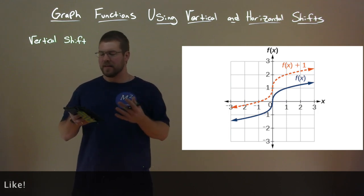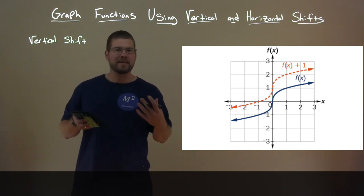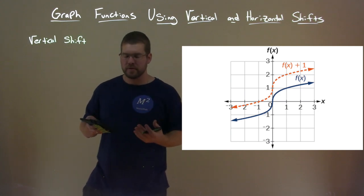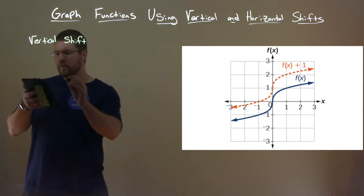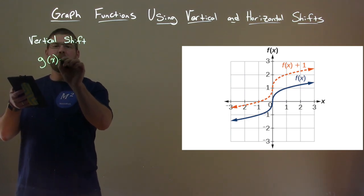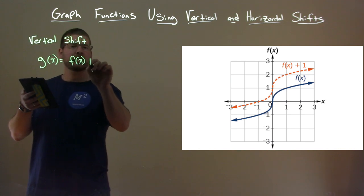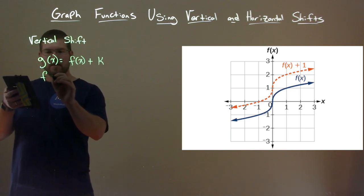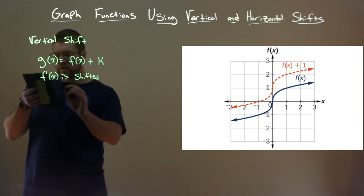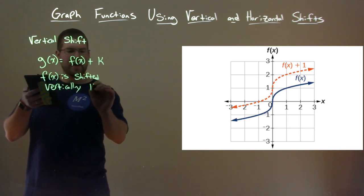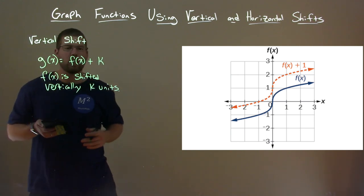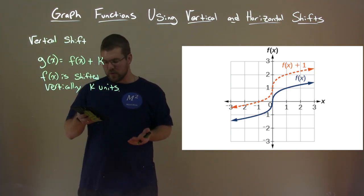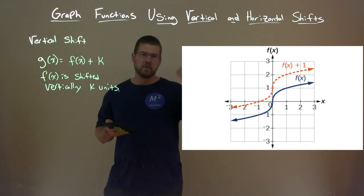Notice the two different ways they label the function. We have f of x and then f of x plus 1, showing that we're shifting that function up one unit, a vertical shift. So if we have a function, let's say g of x, and we said it's some other function, f of x plus k, we would say that our function f of x is shifted vertically k units. If it's a positive k, it's going up; if it's a negative k, it's going down.